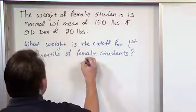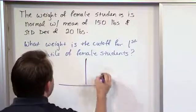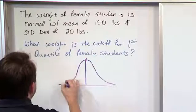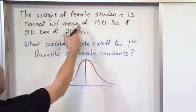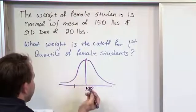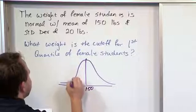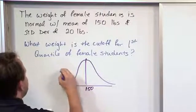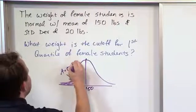So if you wanted to draw in picture form, which I always highly recommend, here's your normal distribution here. The mean of the weights here is 150 pounds. Somewhere down here, I don't know where it is, but somewhere down here this is 25%, the area would be in this case 0.25.